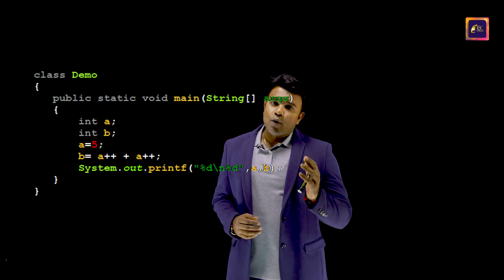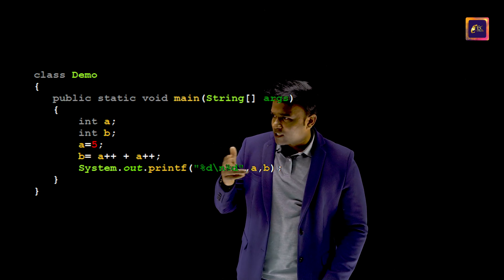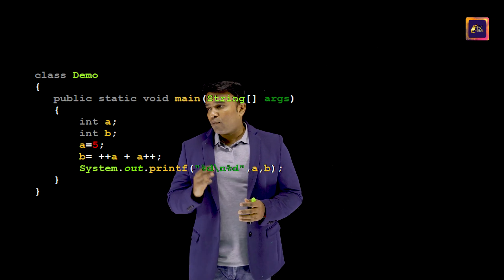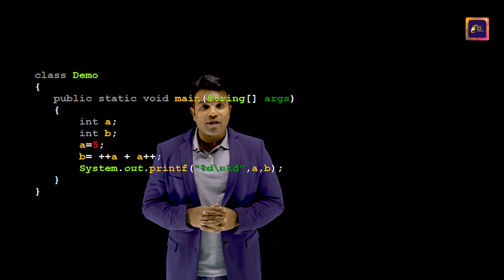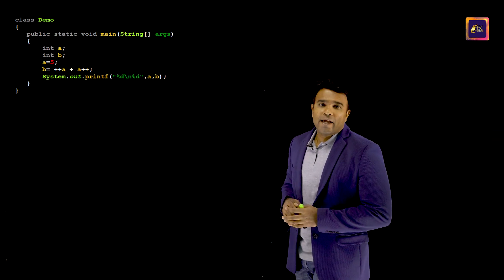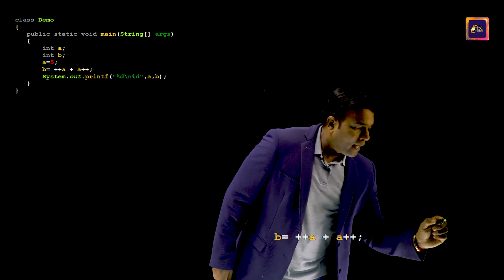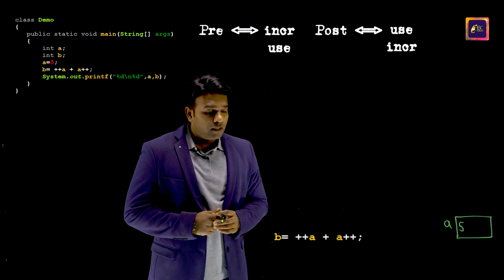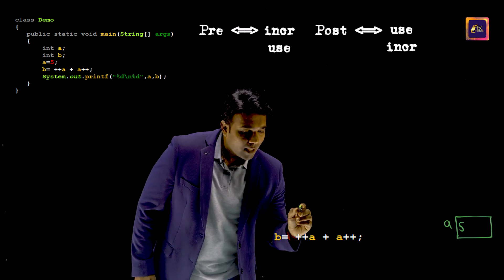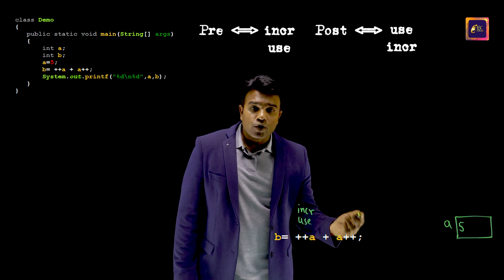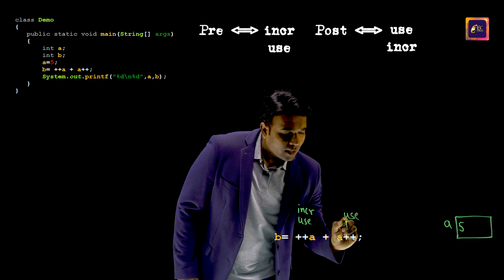Now let's consider one more complex expression. I would remove that expression and get a new one — as you can see, I have one pre-incrementation operator and one post-incrementation operator. This is the expression I need to explain. I will have to create variable A with an initial value of 5. This is pre-incrementation, so I will have to increment and then use. This is post-incrementation, so I will have to use and then increment.